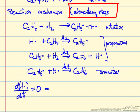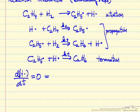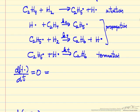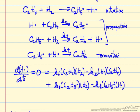Assuming elementary steps means we can write down the rate expressions directly. The rate of the first reaction would be first order in hydrogen and first order in ethylene. Now we look at all of the steps involving hydrogen atoms. For the change in concentration of hydrogen atoms with respect to time: in the first step, making hydrogen atoms, it's first order in ethylene and first order in hydrogen, so this is a plus sign.